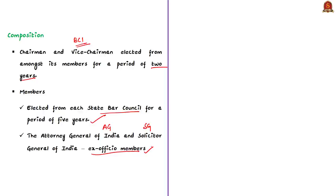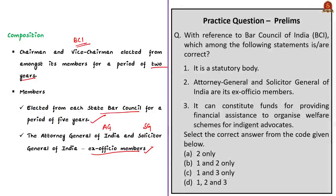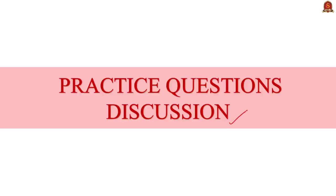Coming to the given question: Statement 1 says BCI is a statutory body — correct, as it is established under the Advocates Act of 1961. Statement 2 says the Attorney General and Solicitor General of India are its ex-officio members — also correct. Statement 3 says BCI can constitute funds for financial assistance to organize welfare schemes for indigent (poor or needy) advocates — this is also correct. Hence, the correct answer is option D: 1, 2 and 3.